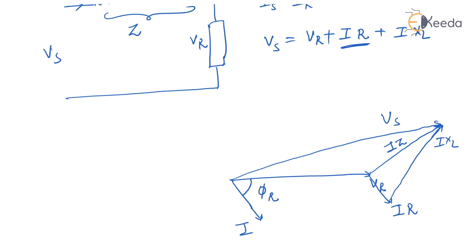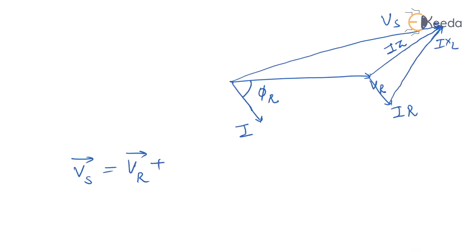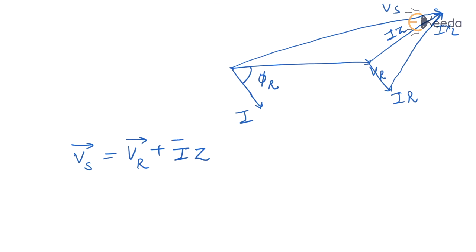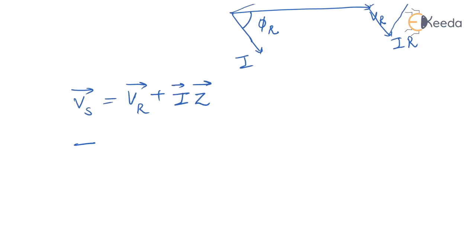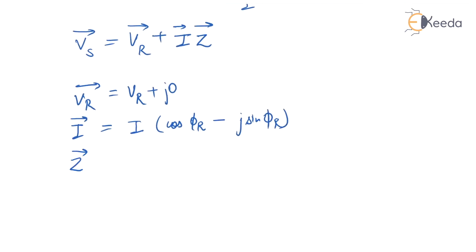It is convenient and profitable to make the line calculations in complex notation. So VS vector equals VR vector plus I times Z. We know that vector VR equals VR plus j0, vector I equals I times (cos phi R minus j sin phi R), and vector Z equals R plus jXL.